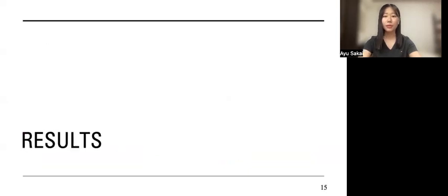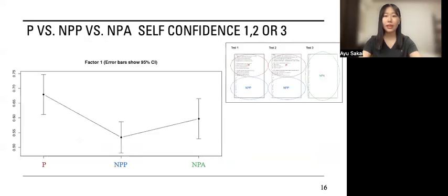Now, I'll tell you what I found. The scores obtained from the task were put into a one-way ANOVA, which is analysis of variance. Here is the graph of self-confidence 1, 2, and 3.